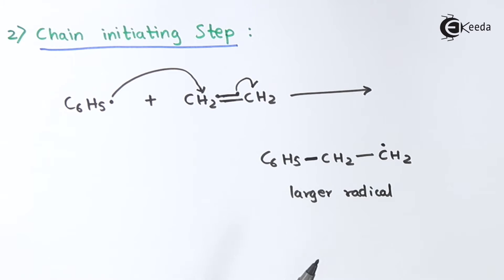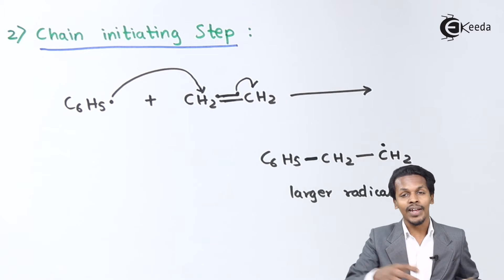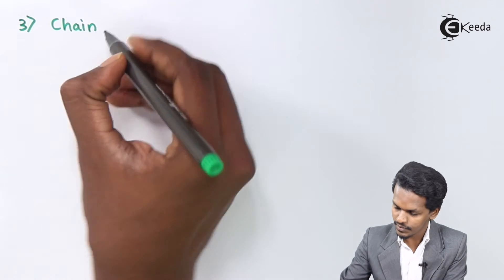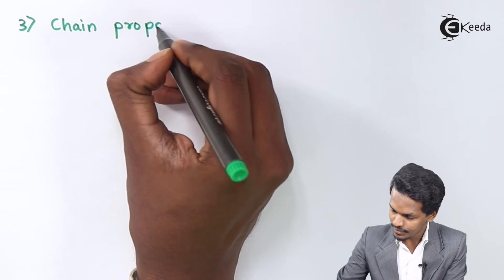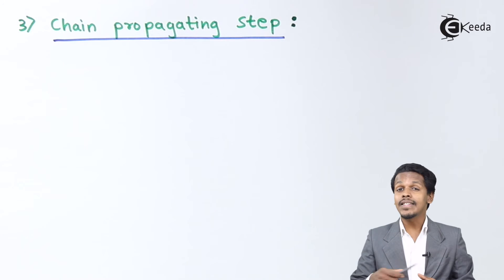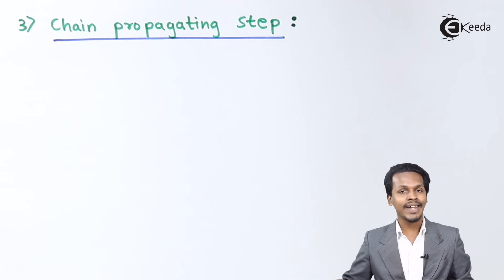This larger radical is still very unstable, so it will influence other ethene monomers, converting itself into an even bigger radical molecule. This process continues, and that is what is discussed in the third step — the chain propagating step.